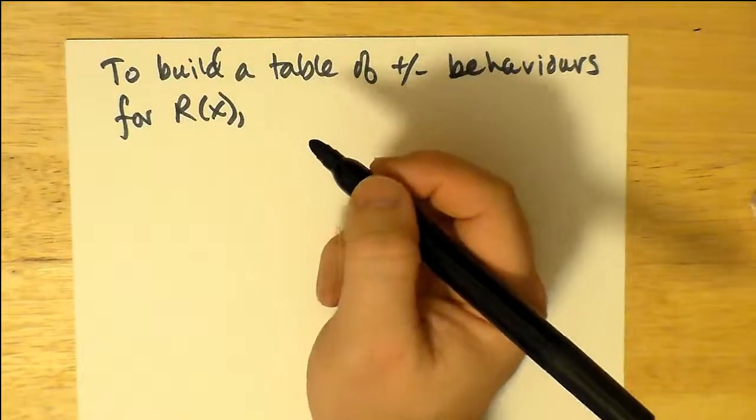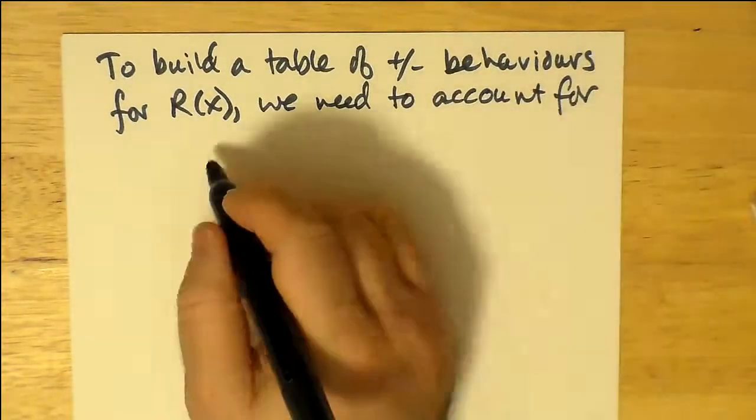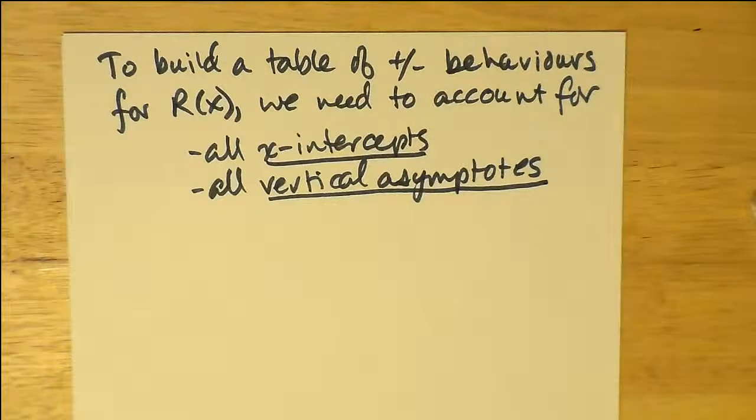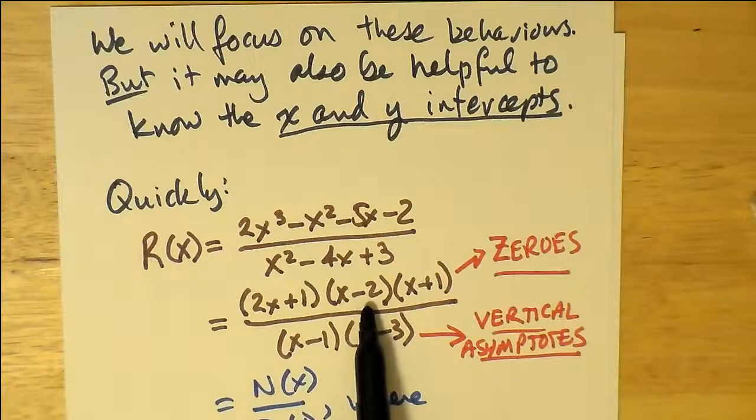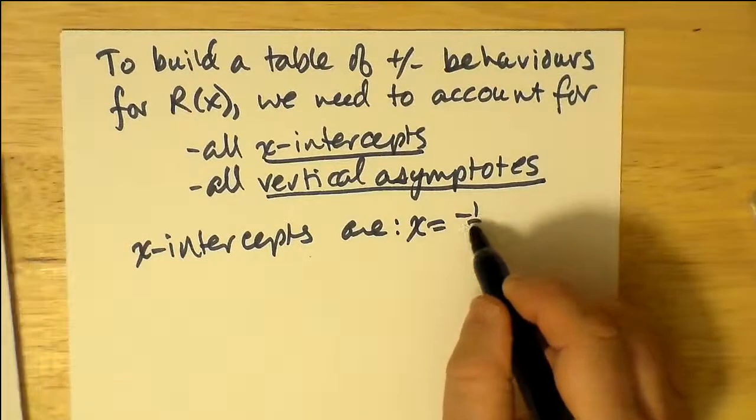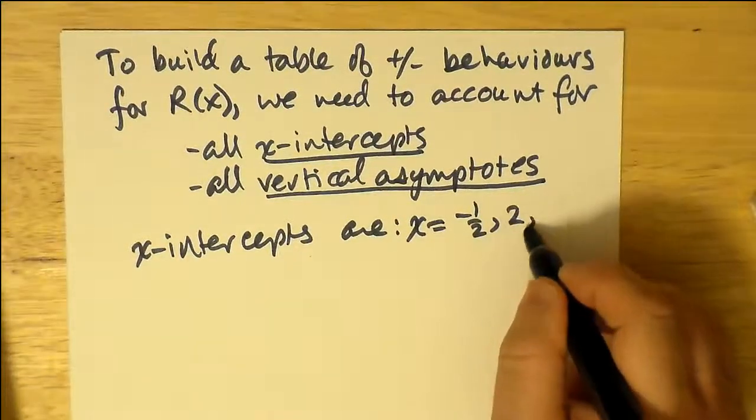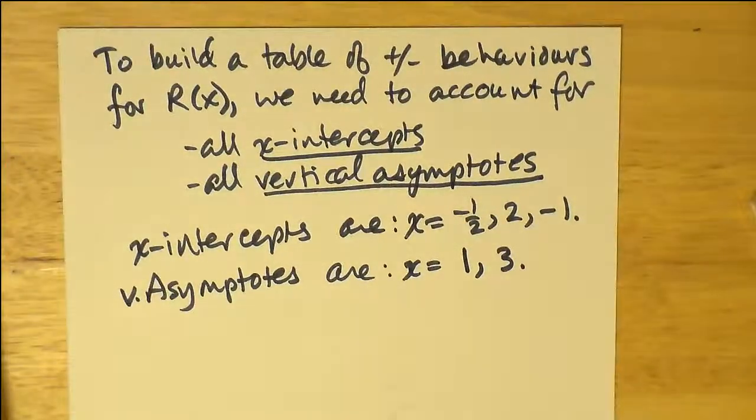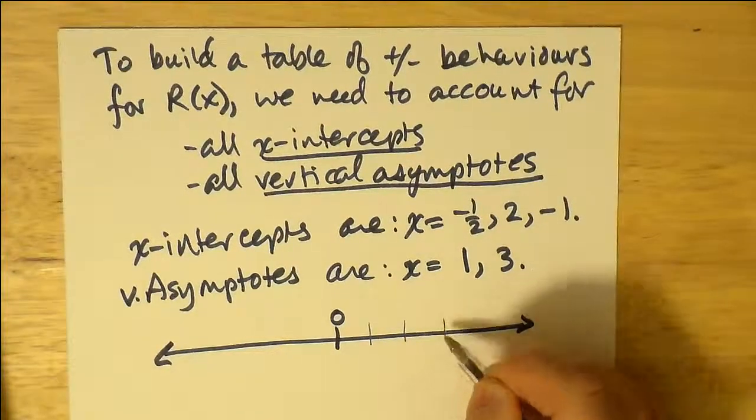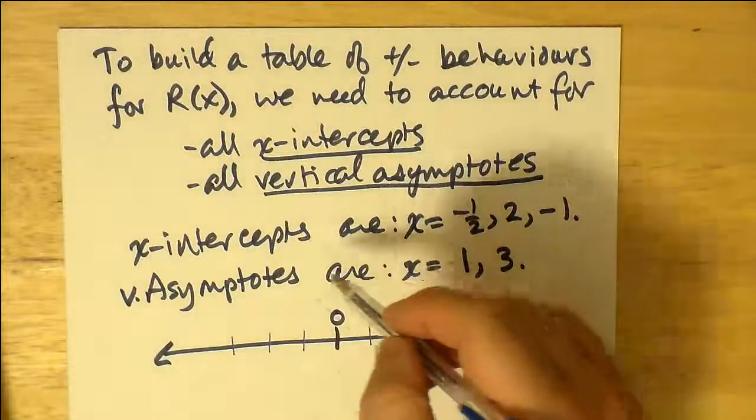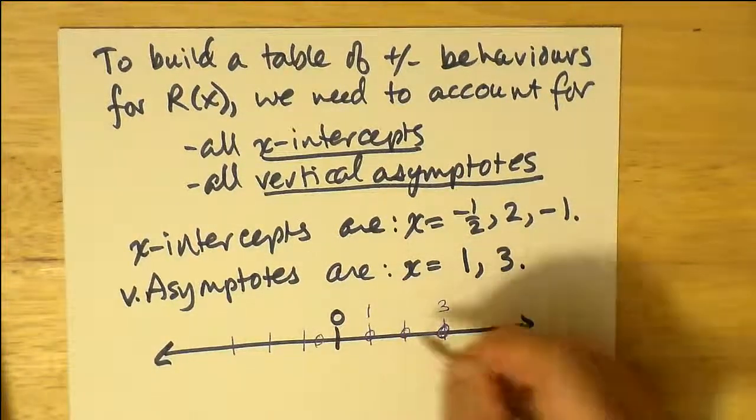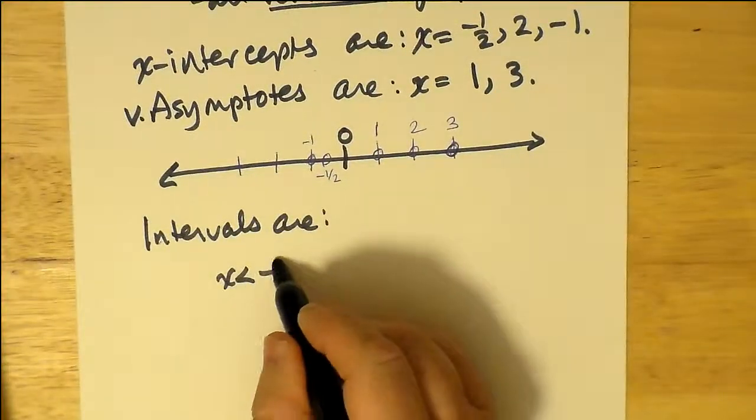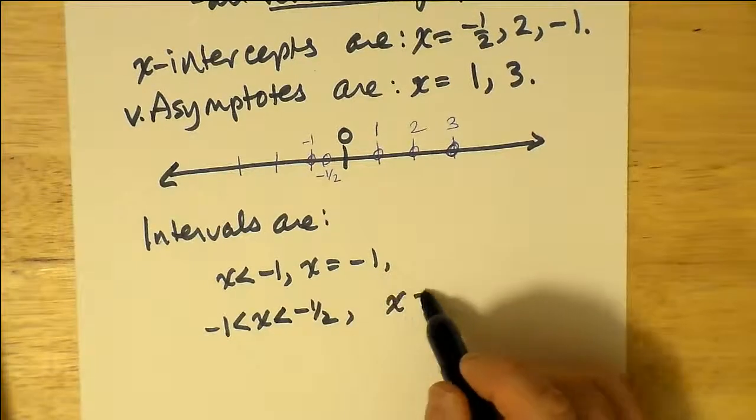To build a table of positive or negative behaviors for R of x, we need to account for all x-intercepts, all vertical asymptotes. And you know, in this case, the slant asymptote, which we'll sort of take for granted is going in some kind of predictable fashion. In this case, the x-intercepts are negative a half, two, and negative one. The asymptotes, the vertical ones, are at x equals one and three. All right, so we can build a number line, and that number line can just have the numbers between three and negative three, perhaps. And we can sort of figure out where our zeros go, and from that we can actually figure out our intervals, which is really important here. So we figure out our intervals.